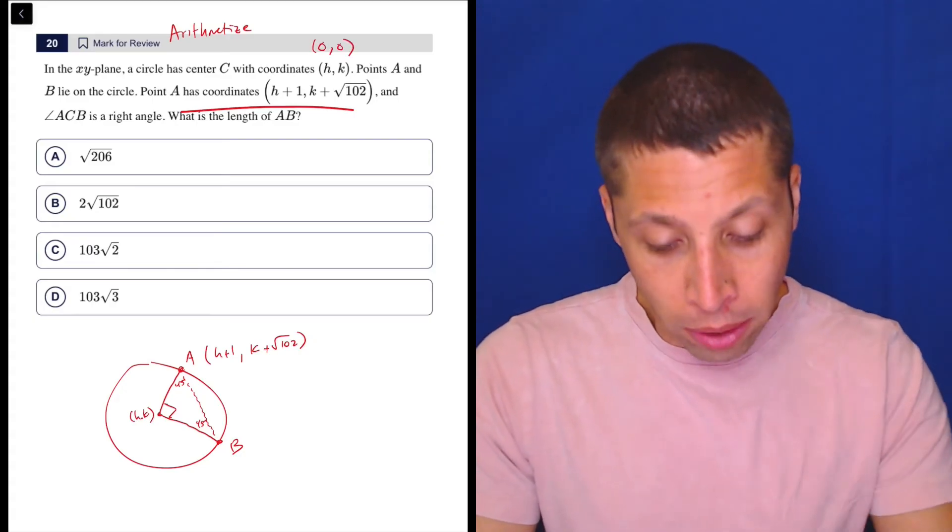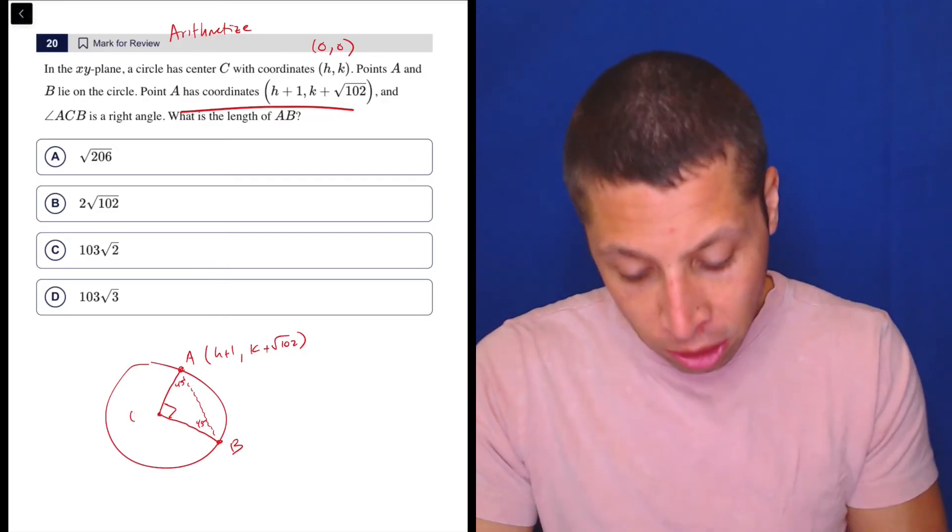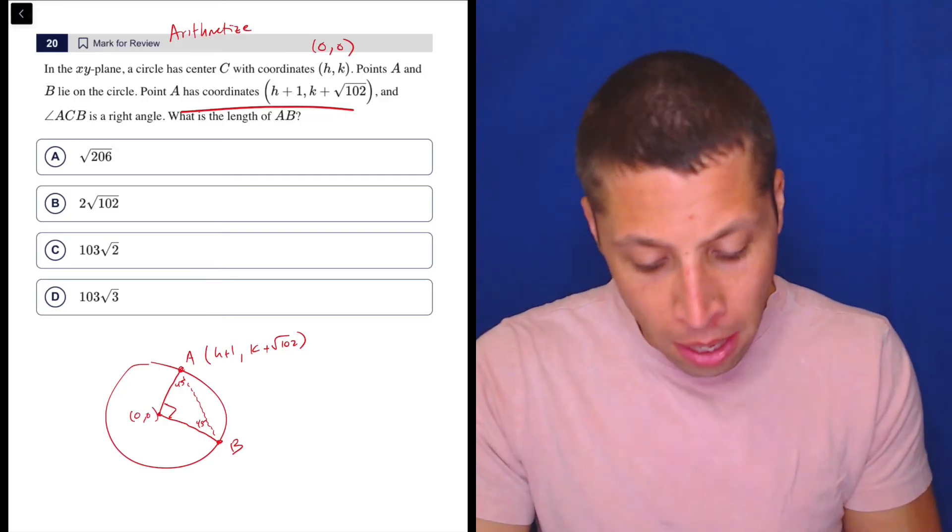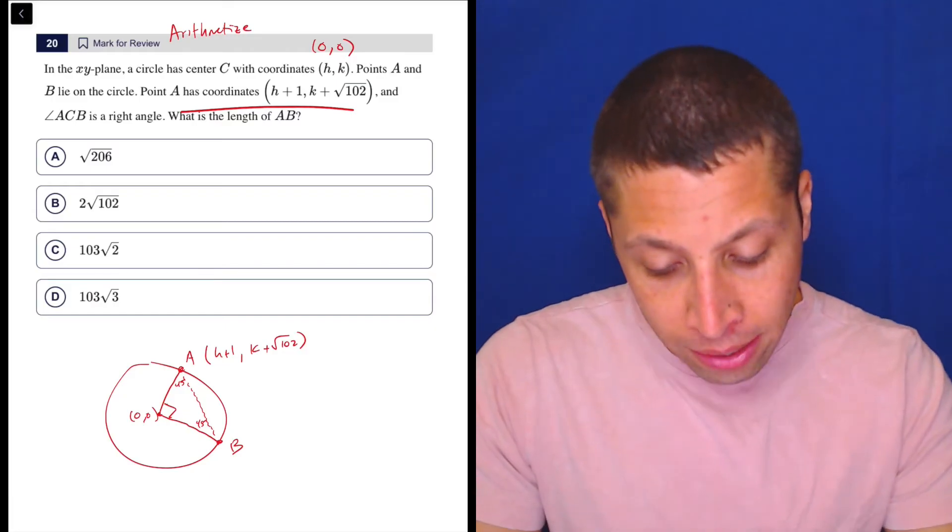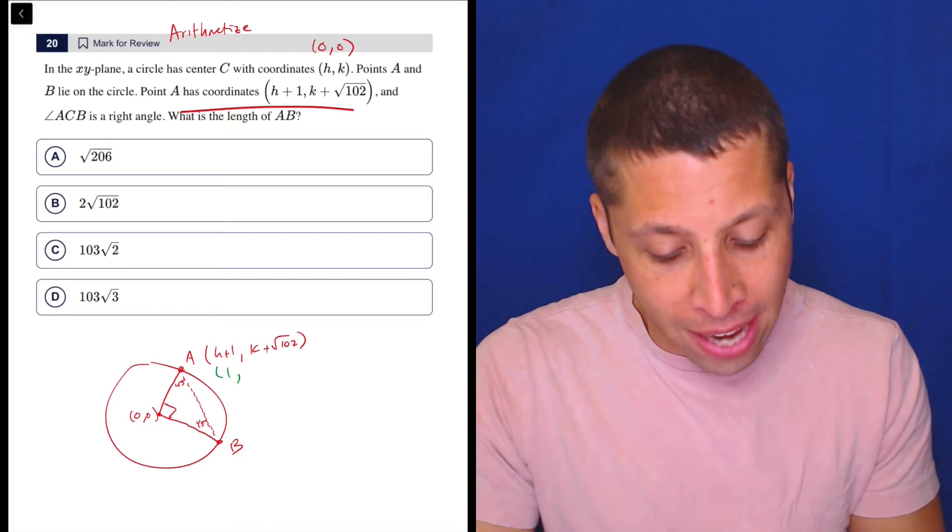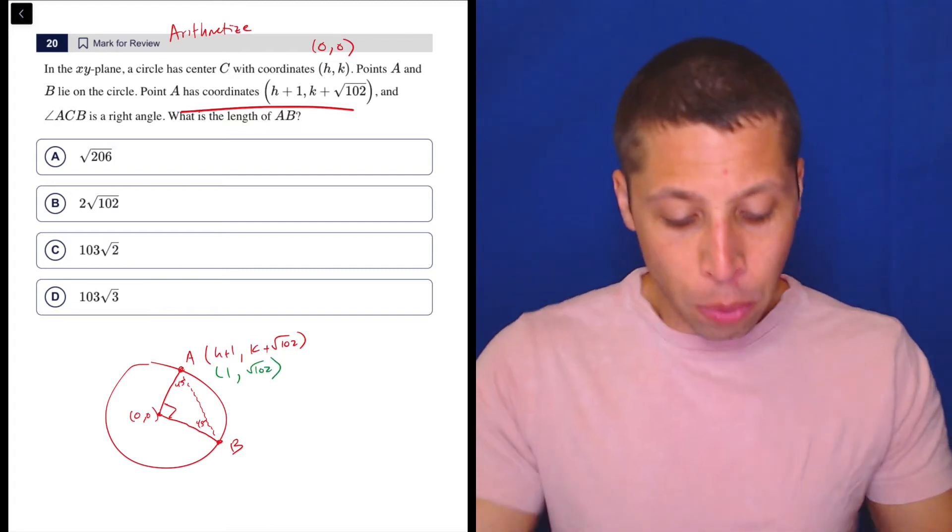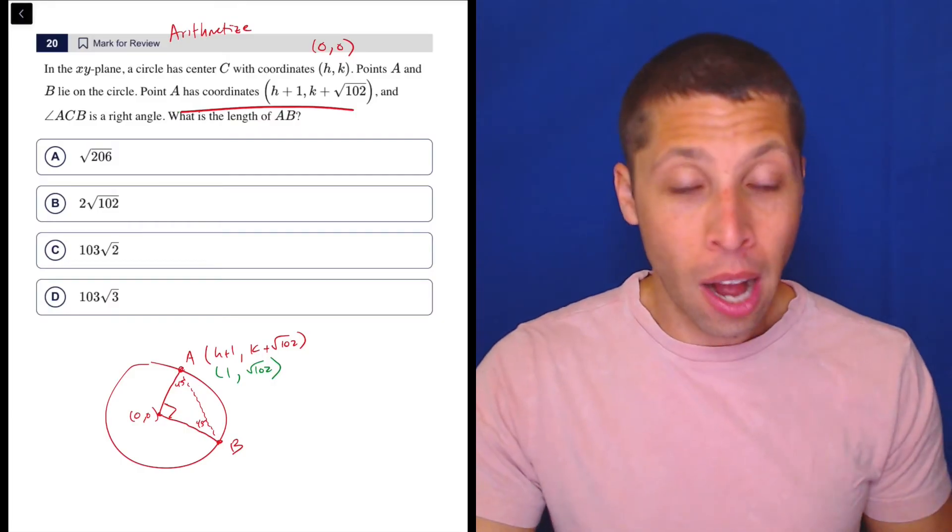Because then I don't have to worry about any sort of complexity here. So this center quickly just becomes something really simple. But also this other point. What is 0 plus 1? That's 1. What is K, if K is 0, plus radical 102 is just radical 102. So at this point now, it's a little bit simpler of a point.